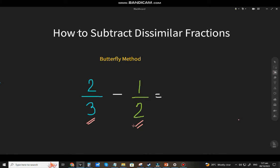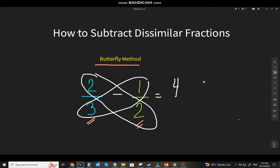Now how are we going to subtract them? I'm going to teach you the butterfly method. All you have to do is cross multiply it like this. 2 times 2, that will be 4. 1 times 3, that will be 3. Now just copy the operation. Since it's minus, it will also be minus. And lastly we have 3 times 2, that will be 6.